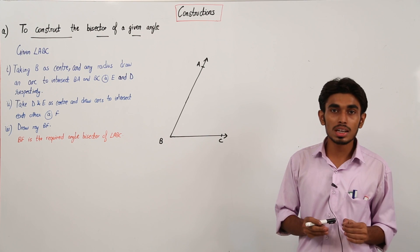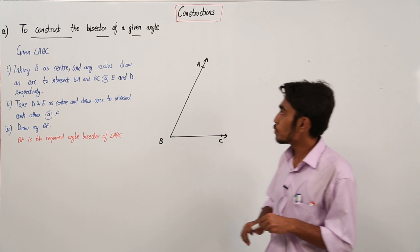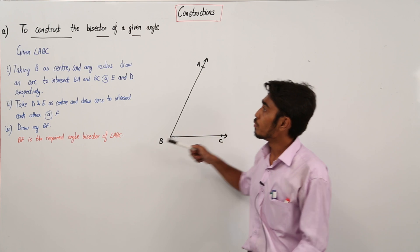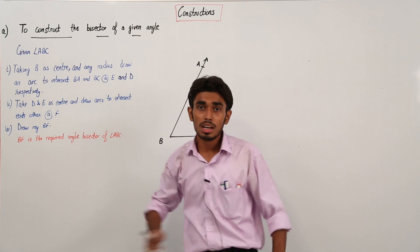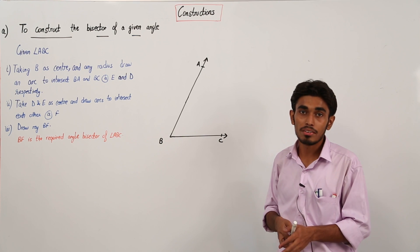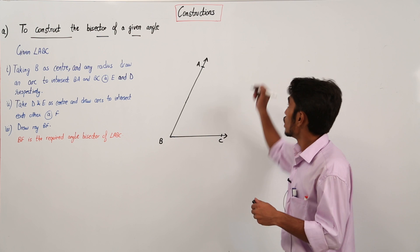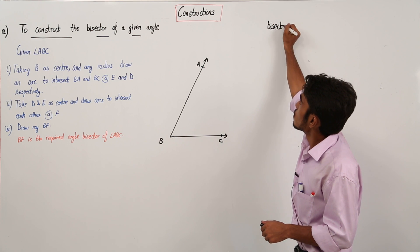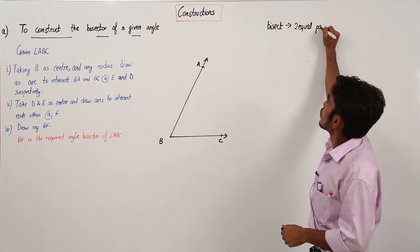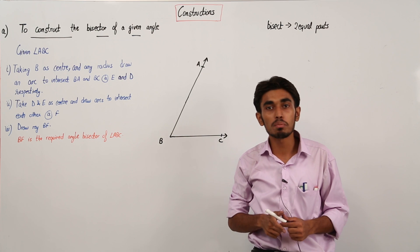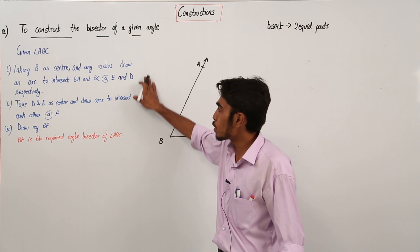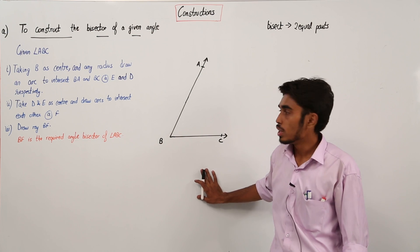Students, let us start with the first construction. In this we will try to construct the bisector of a given angle. As you can see in the diagram, we are given an angle ABC. We don't know the measure of angle ABC. Without even knowing the angle, we want to bisect it. Bisect means divide it into two equal parts. So here are the steps of construction to draw a bisector of this angle.